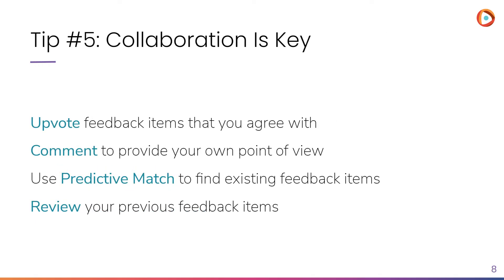And finally, collaboration is key. Collaborating on feedback is one of the most helpful things you can do as a tester — it's the community aspect of the testing community. When submitting feedback, you can use Predictive Match to find existing feedback items that match your experiences. Instead of creating a duplicate item, comment and vote on one that already exists. That way, we know it's something multiple people have thought of or experienced.